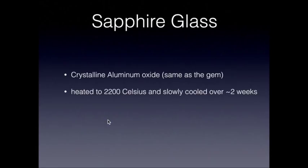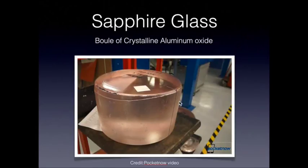Then you slowly cool the aluminum oxide over a two-week period — a very slow cooling process. After that you get a big block of aluminum oxide. Here is an example of one that's been created — they call these large blocks 'boules,' a boule of crystalline aluminum oxide. From there you have to cut it and create thin sheets to put on, for example, a cell phone.